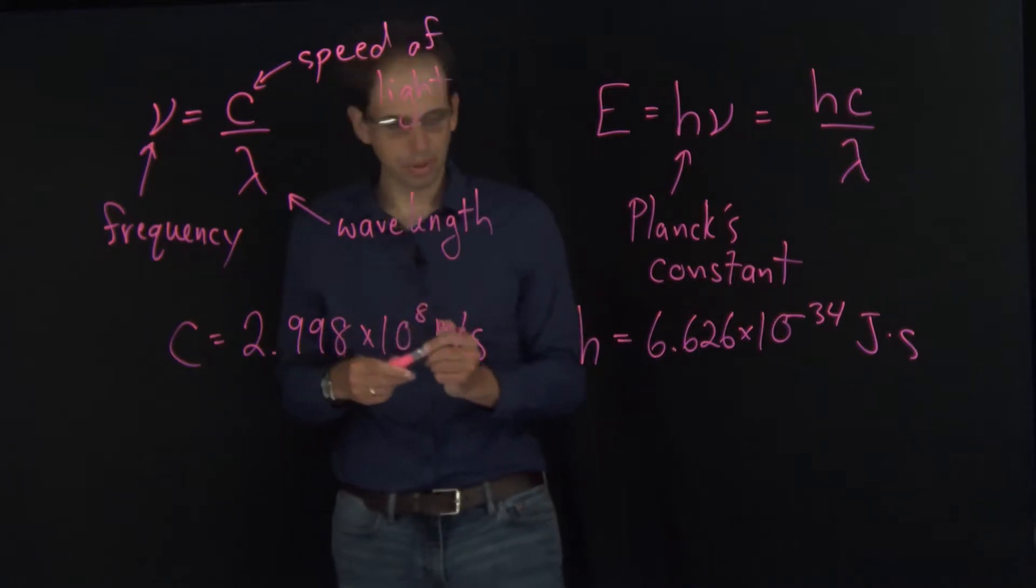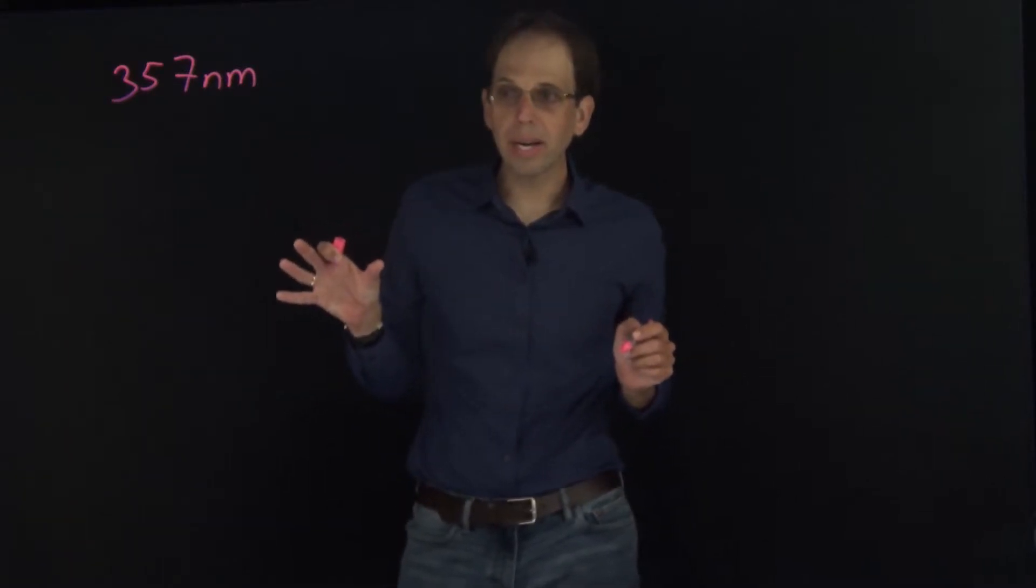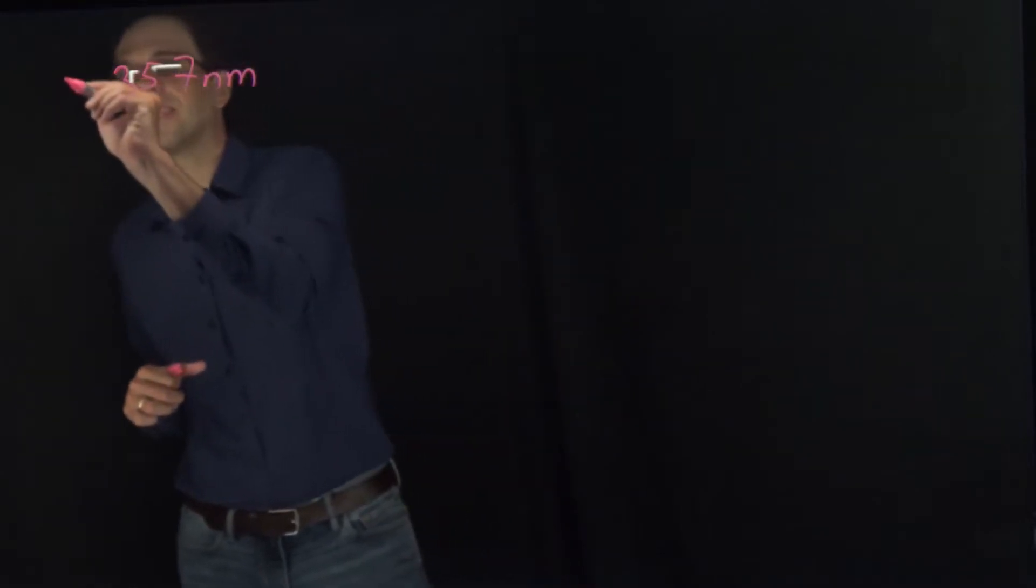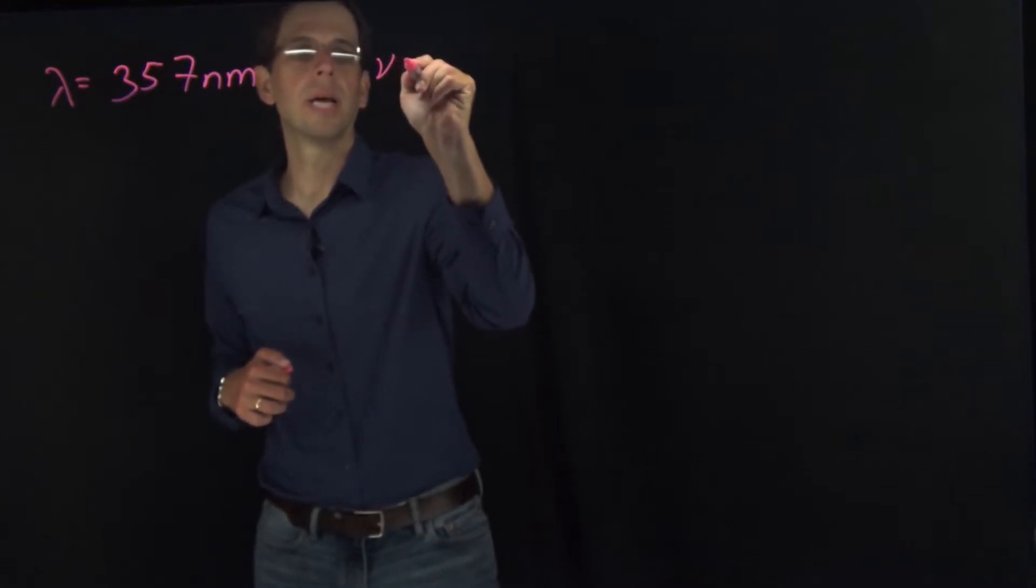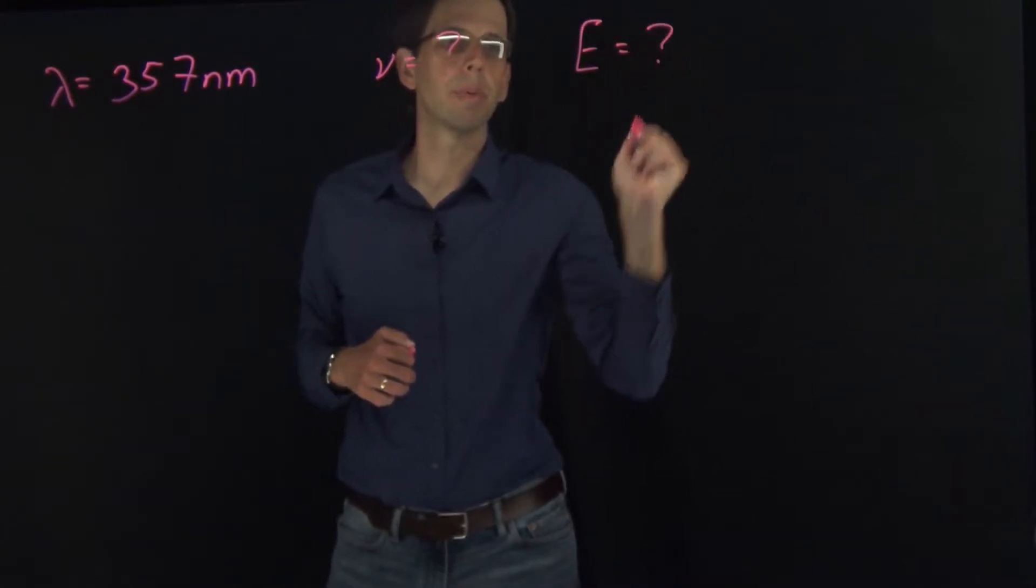Let's do an example. The peak absorption wavelength of retinal, the key molecule in our eyes for vision, in vivo occurs around 357 nanometers. What is the corresponding frequency of light and the energy of each photon at this wavelength? Our wavelength is 357 nanometers. We want to know what the frequency is and energy per photon.